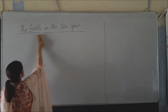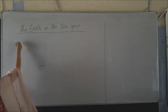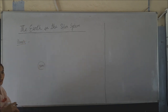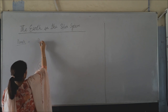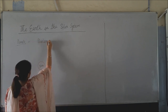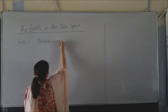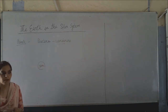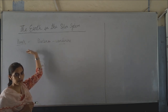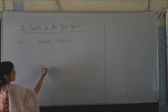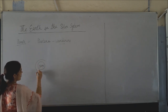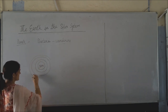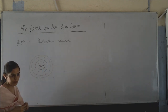Now let's come to the planets. The word planet comes from the Greek word 'planetai', which means wanderers — those who keep on moving. Planets are wanderers; they keep on moving around the sun. That's why they are known as wanderers.